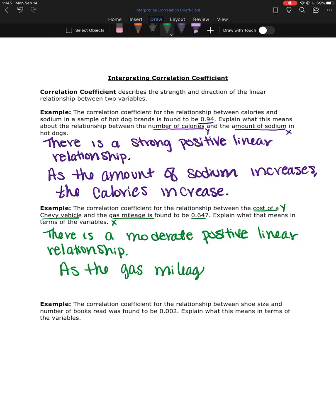So as the gas mileage increases, here I am explaining it in terms of the variable. So as the gas mileage increases, the cost, again, this is positive, so the cost is also increasing. So the cost increases as the gas mileage increases.